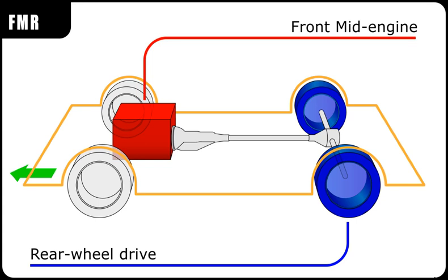This layout, similar to the FMR layout, with engine between driver and behind front axle, adds front-wheel drive to become a four-wheel drive.